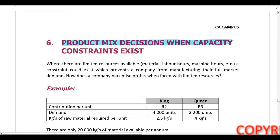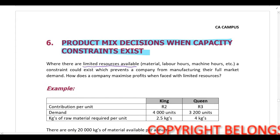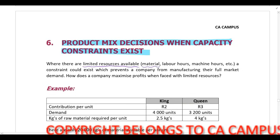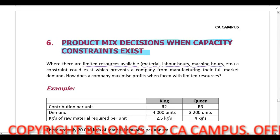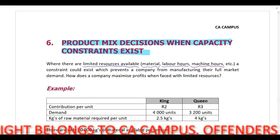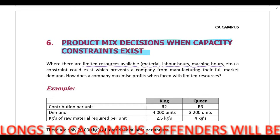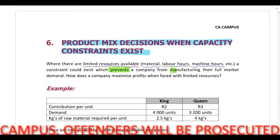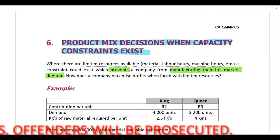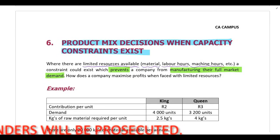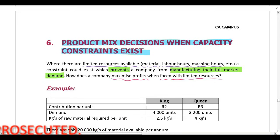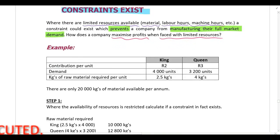We need to look at product mix decisions when we have capacity constraints. This is where you need to make a decision but we have limited resources available. In the question they will tell you we only have a certain amount of raw material, labor hours, or machine hours available. If there's a limit on resources, the company cannot produce everything they would like to produce, and you need to perform calculations to determine how to maximize profits when faced with limited resources.